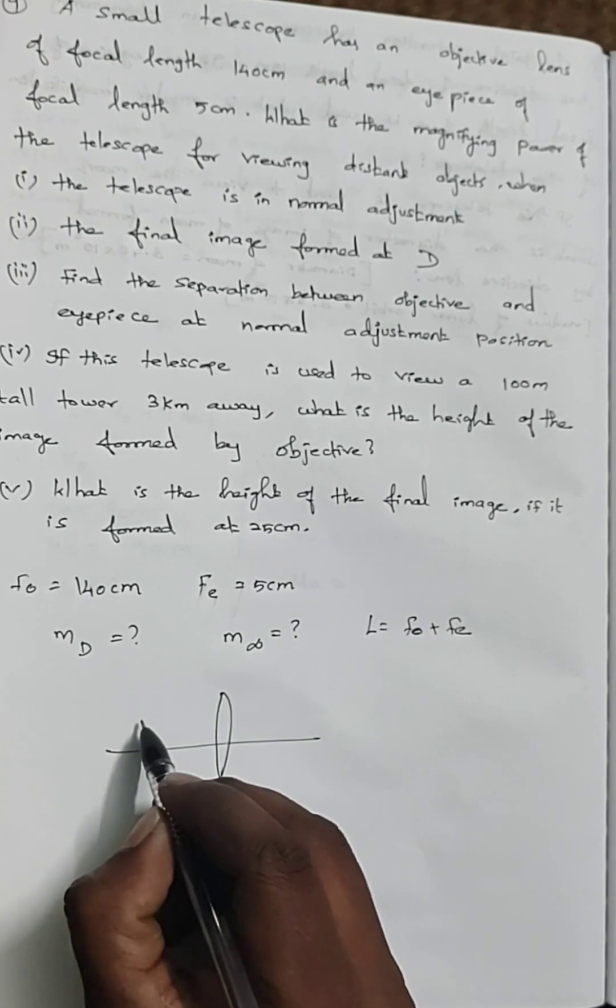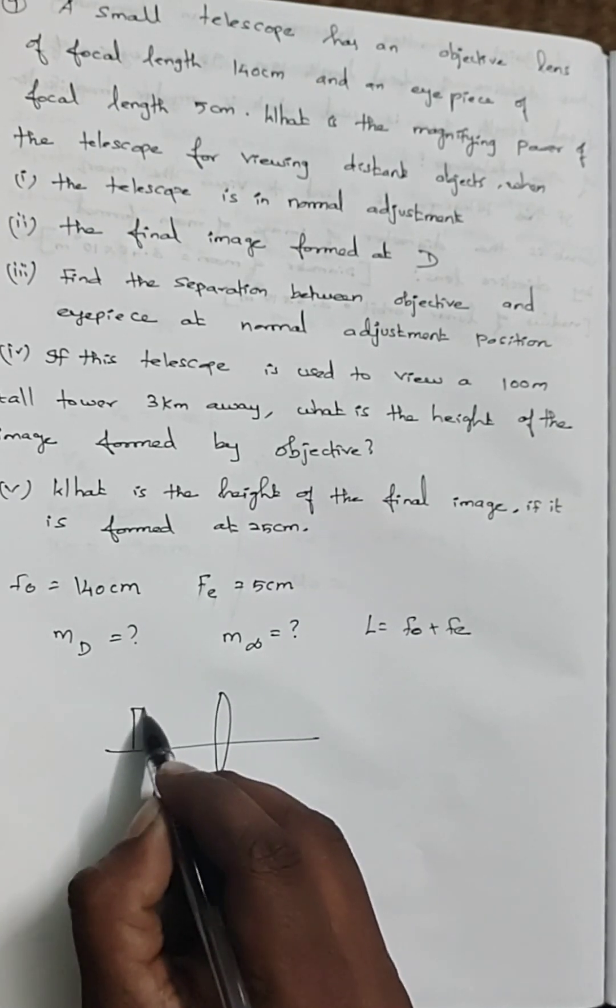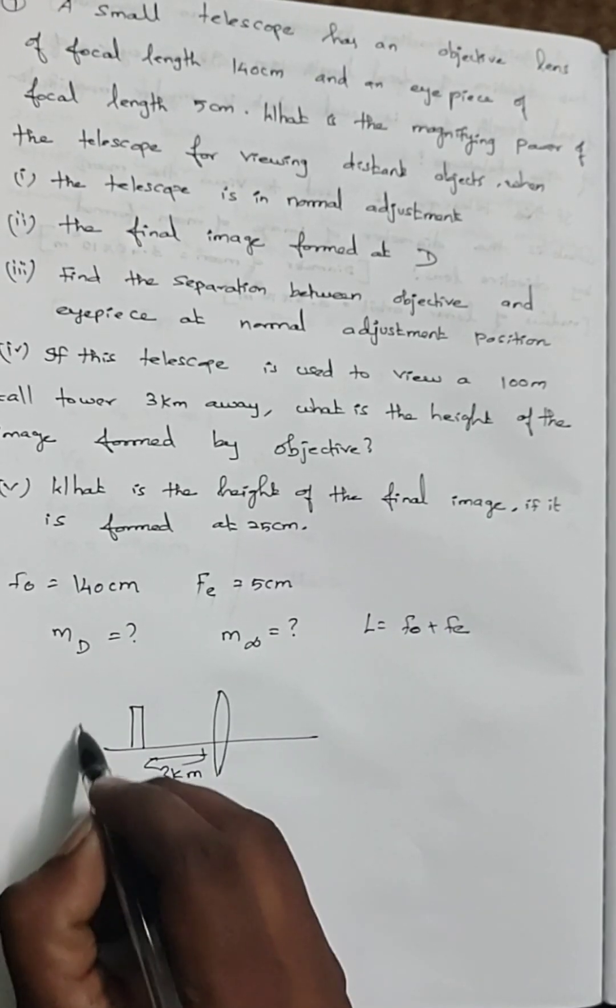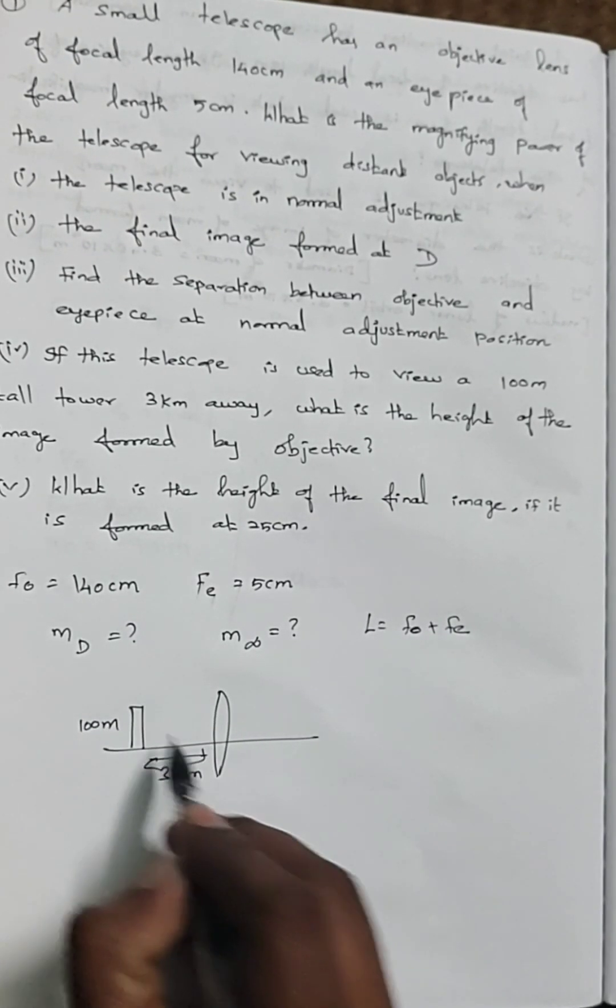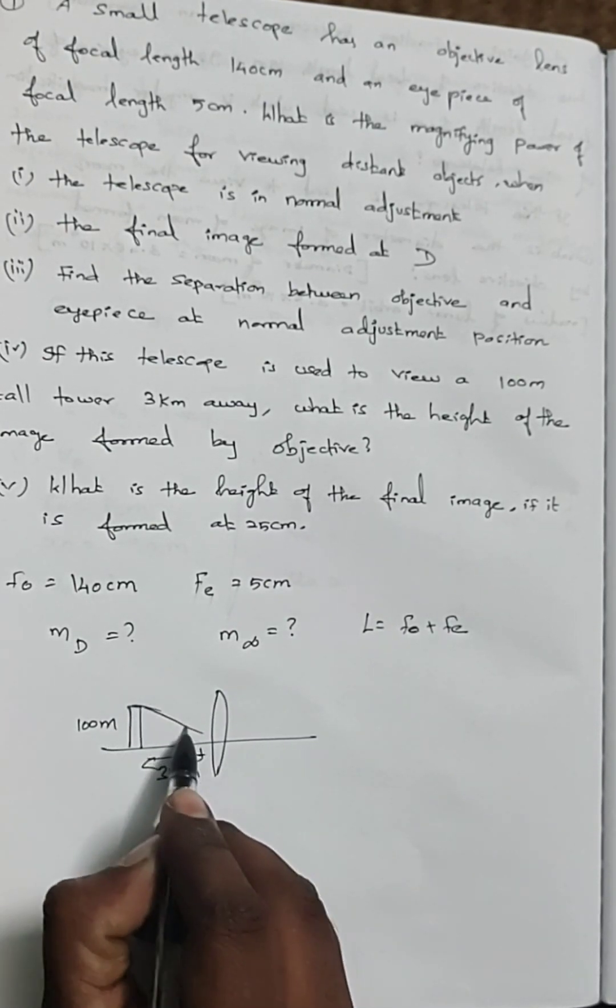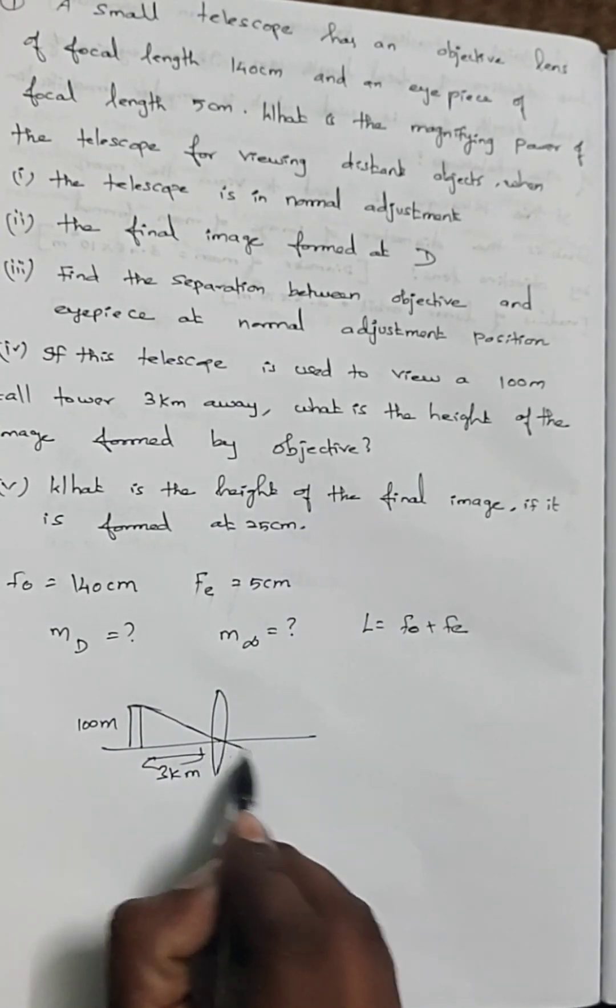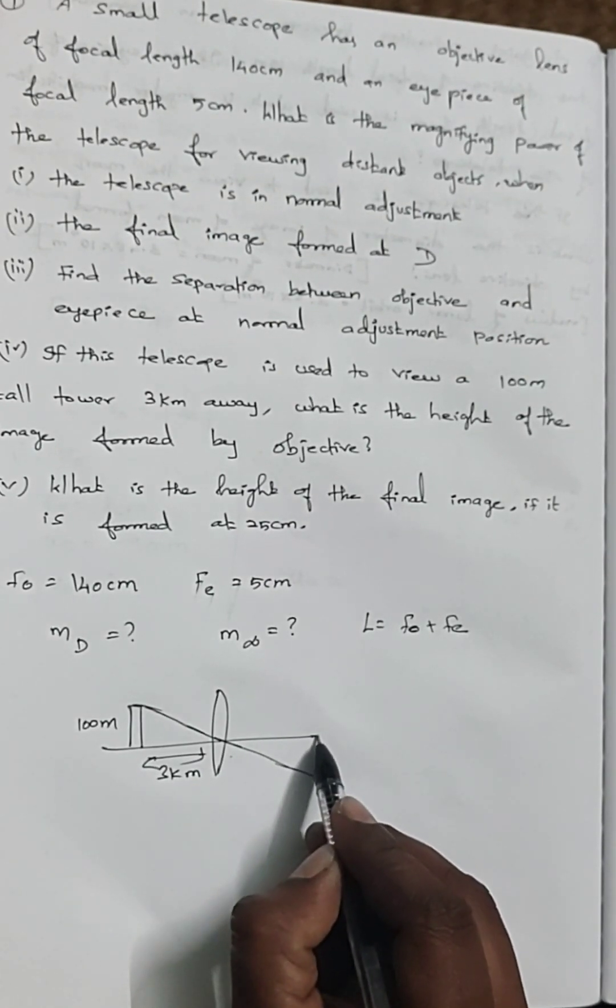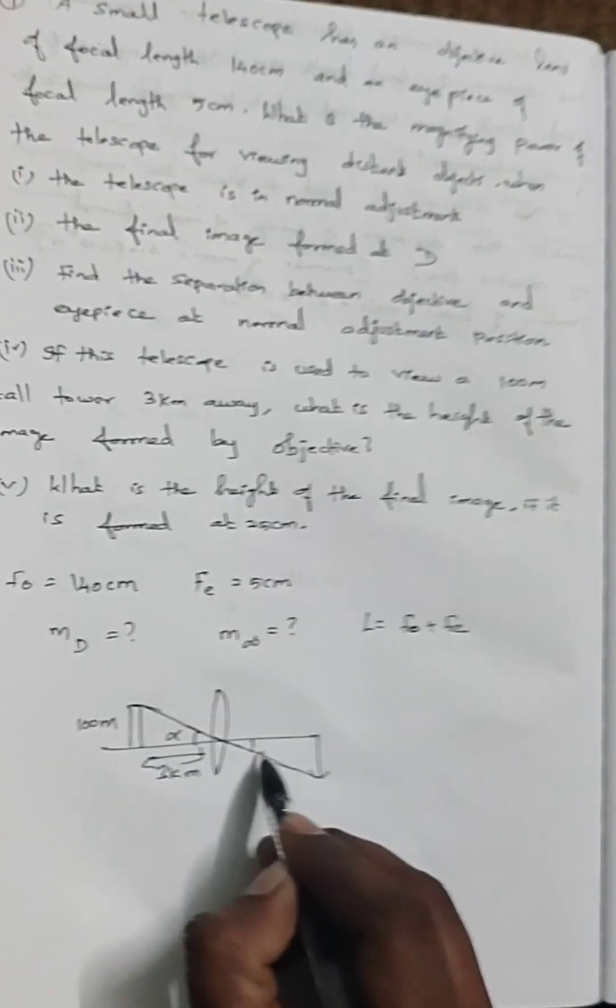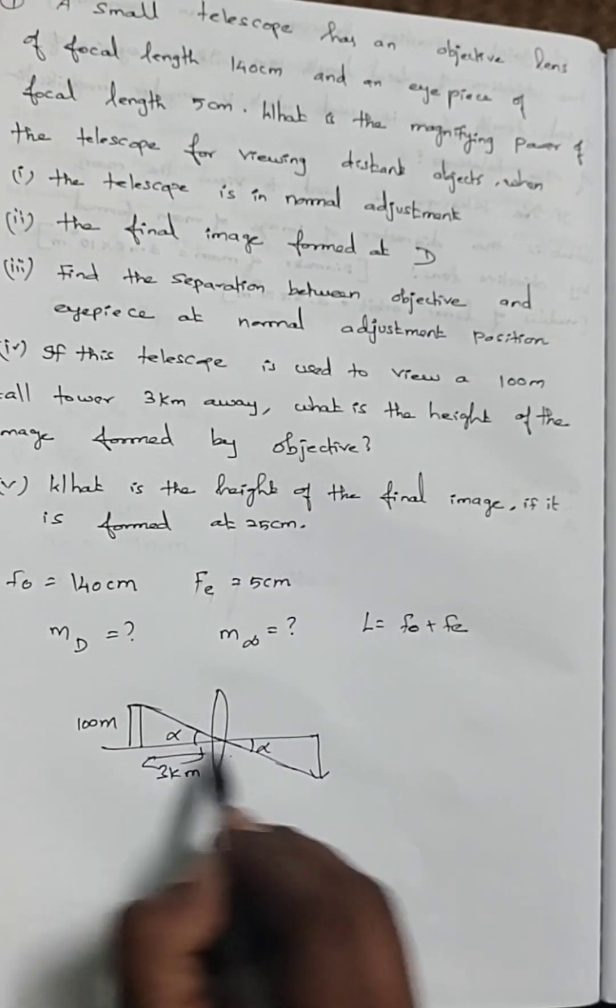A building is there 3 kilometer away, 100 meter tall building. If we are looking at an object through the telescope, the object will make an angle with the lens and the image will be formed here. There will be an angle formed, we call this alpha.